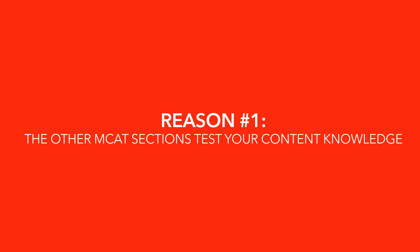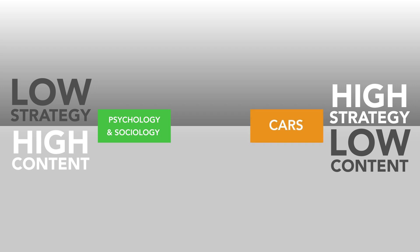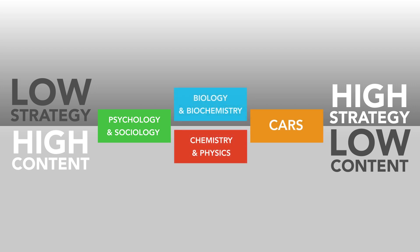Reason number one: the other MCAT sections test your content knowledge. The other three sections include Chemistry and Physics (CP), Biology and Biochemistry (BB), and Psychology and Sociology (PS). These sections test students' knowledge of scientific content and require knowing quite a bit of content knowledge. Given that these subjects carry significant overlap with most pre-med courses, you probably already know a lot of the information from your undergraduate classes. Simply knowing the content knowledge without applying any particular strategy may be enough to score a 125 or even higher on a particular subsection.